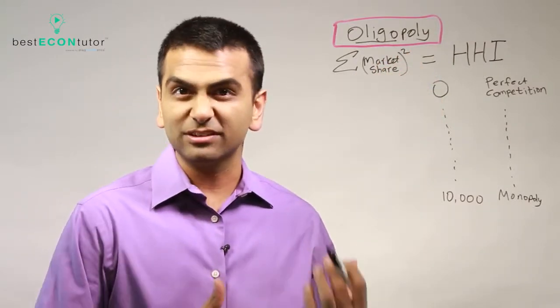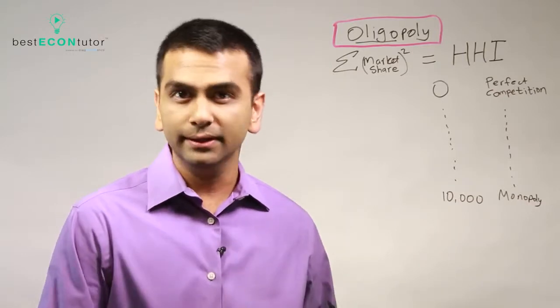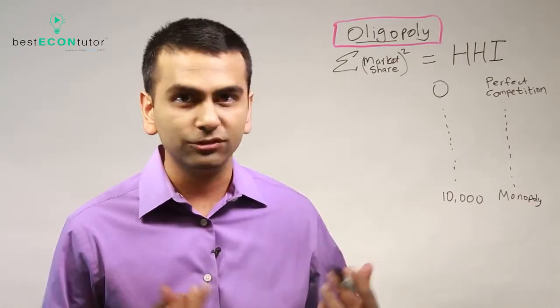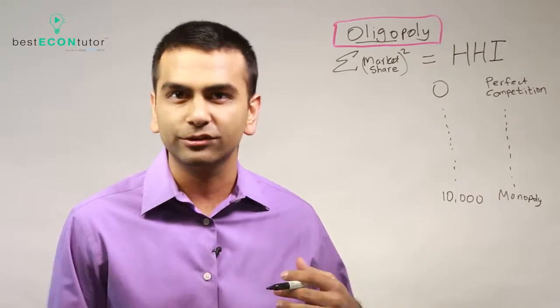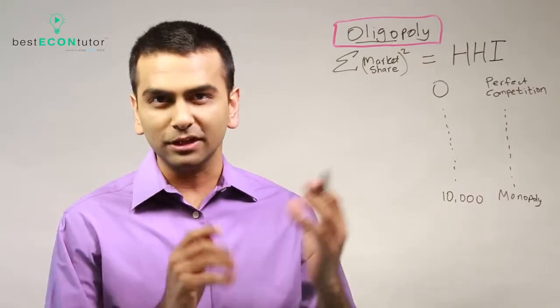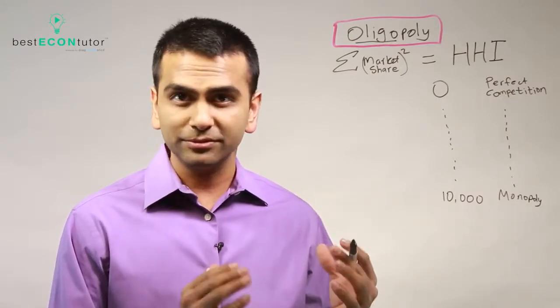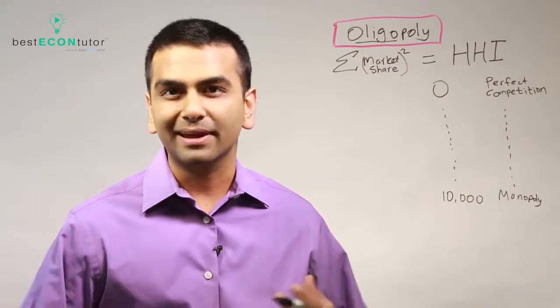So an oligopoly basically because there's a few firms, not just one, but it's not quite perfect competition because there's no free entry. People can't just spring up shop and compete with you. So that's what an oligopoly is. There's a few firms, not just one, but other people can't really enter easily.